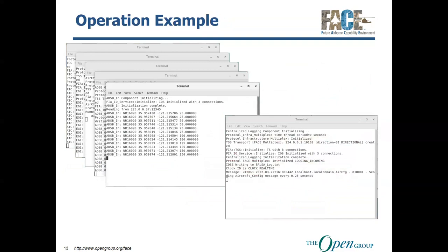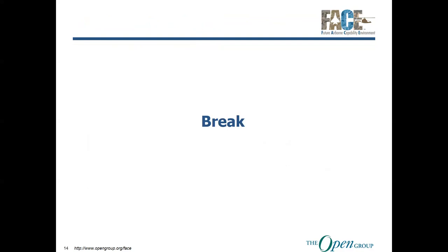Here's what BALSA looks like when running — in this case running with one UOC per executable. It creates a bunch of terminals and prints out the data being processed. The ADS-BN is shown on the left, and the centralized logging component on the right just prints out a message or two and waits in the background. The ADS-BN is showing everything it's got, and if everything is correctly implemented, it will be receiving ADS-B data displayed on that console window. That's it for the BALSA portion.